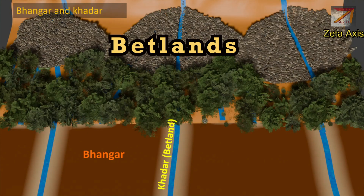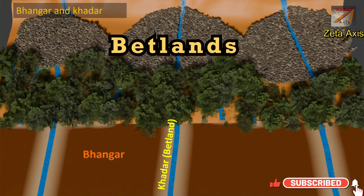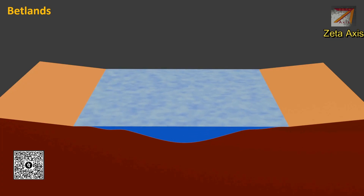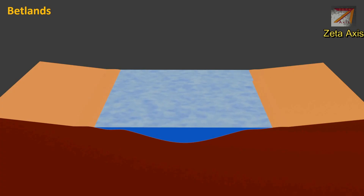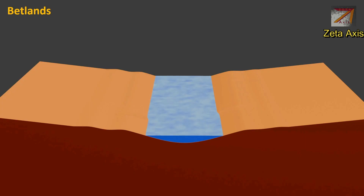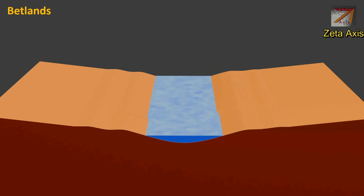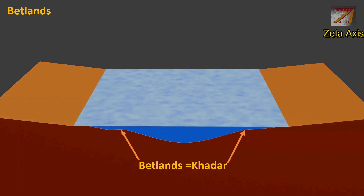Some important features of the Punjab Plains: The first is Beth lands — khaddar-rich floodplains where fertile soils are deposited annually, making them very fertile. The region around rivers periodically receives fresh deposition of alluvial soil due to flooding. These regions of fresh alluvium deposition are called khaddar deposits, while regions with older alluvial soil are called bhangar soil. The khaddar deposits are called Beth lands or Beths in the Punjab Plains.